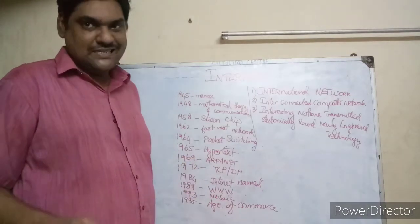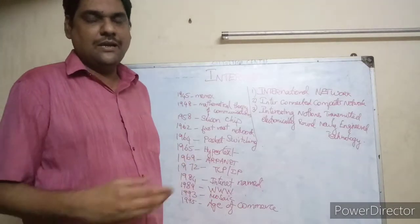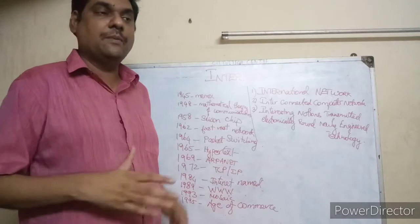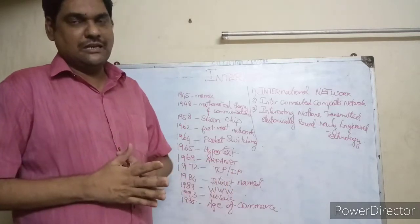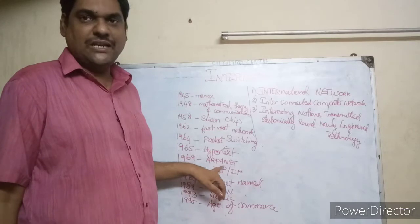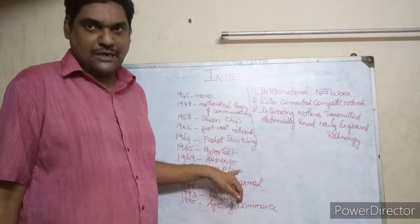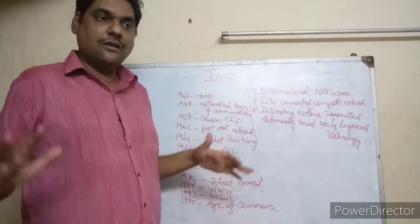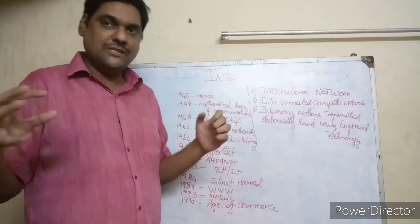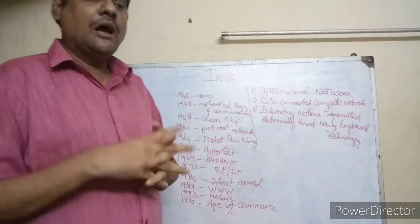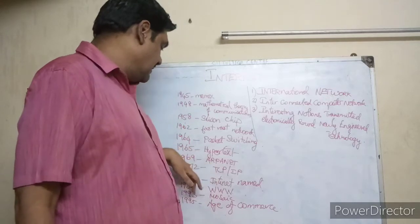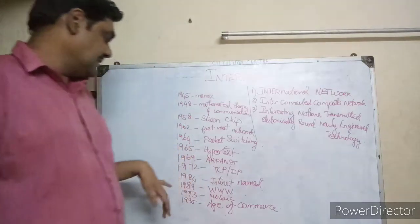In 1969, as discussed in the last class, there was a network called ARPANET — Advanced Research Project Agency Network. In the US, four universities were connected to each other for communication. That was in 1969.